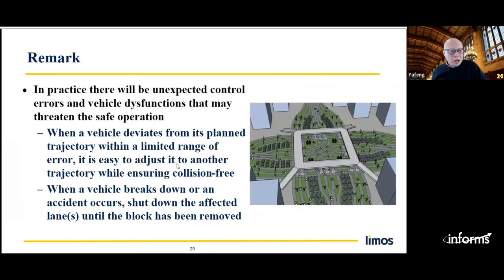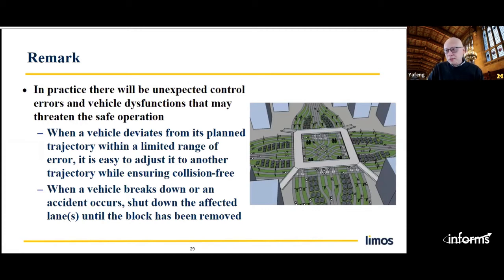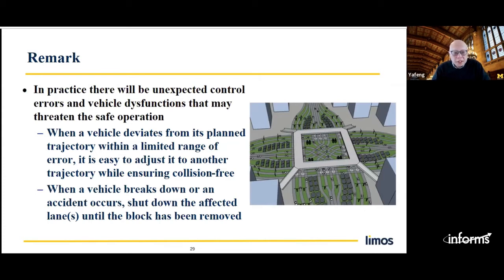One question we always get is: what if something goes wrong? For intersection operation, because each lane has an underlying beat governing the operation, it's very easy to detect if a vehicle deviates from the underlying beat and make adjustments. If a vehicle breaks down or an accident happens, you can shut down the affected lanes until the blockage is removed. Other unaffected lanes theoretically don't need to be shut down. The risk level associated with this operation is similar to the risk level associated with vehicle platooning, which has been heavily investigated.